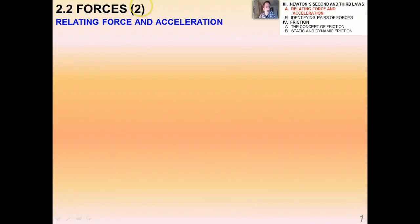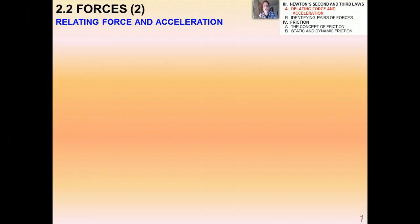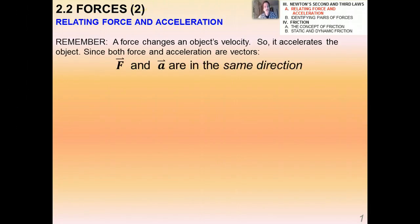We've spent a lot of time talking about Newton's first law and equilibrium. To remind you, when an object is in equilibrium it can either be not moving at all or must be moving at a constant velocity. If it's not moving, it is moving at a constant velocity of zero. In this video I'm going to talk about Newton's second and third laws. You already know most of these concepts from physics and we've been dealing with them almost all year.